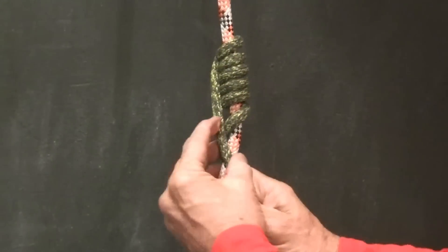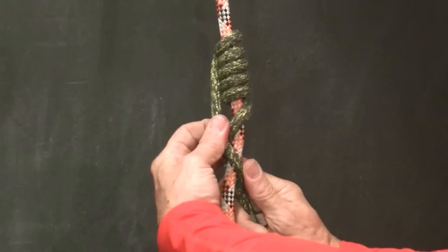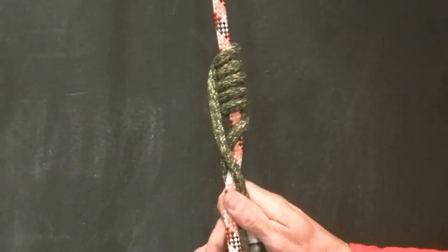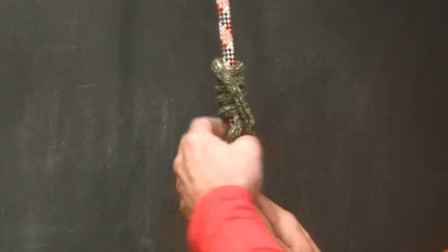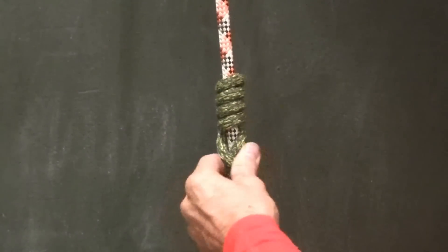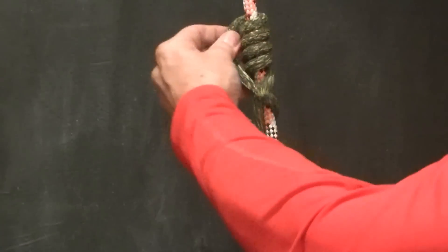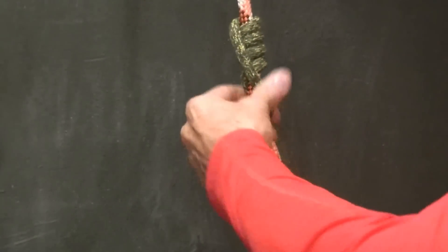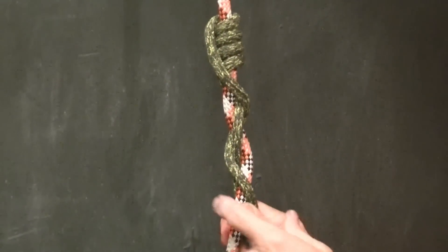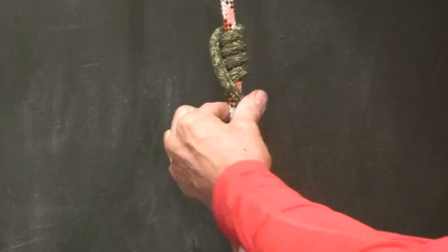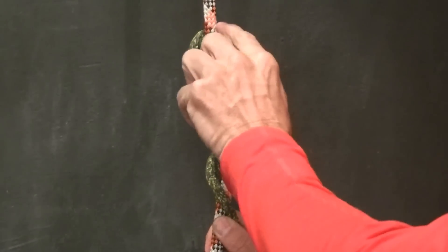I can continue that process and cascade another wrap down and turn that into a braid. Now I have one, two braids and one, two, three, four.